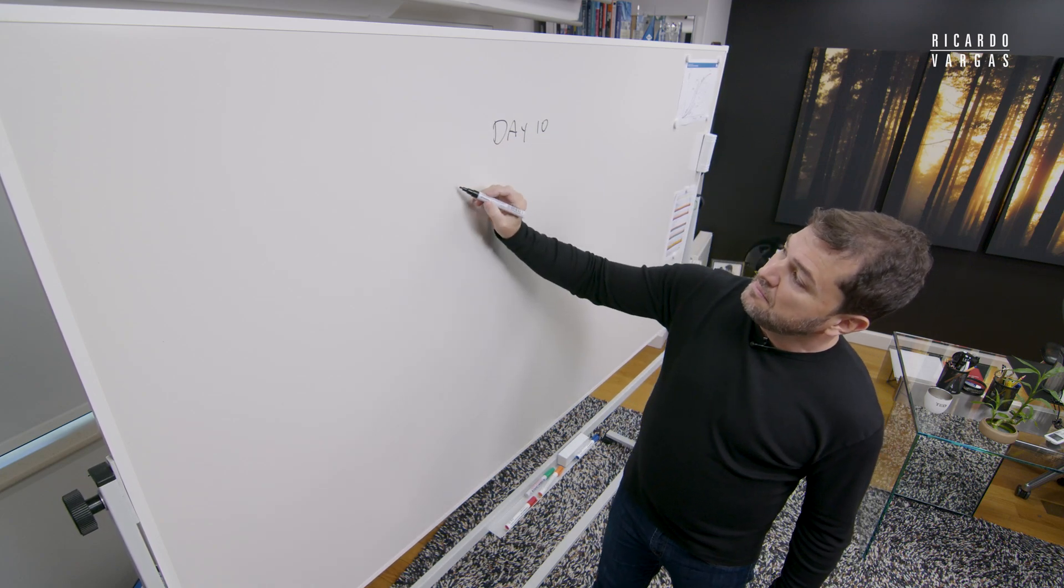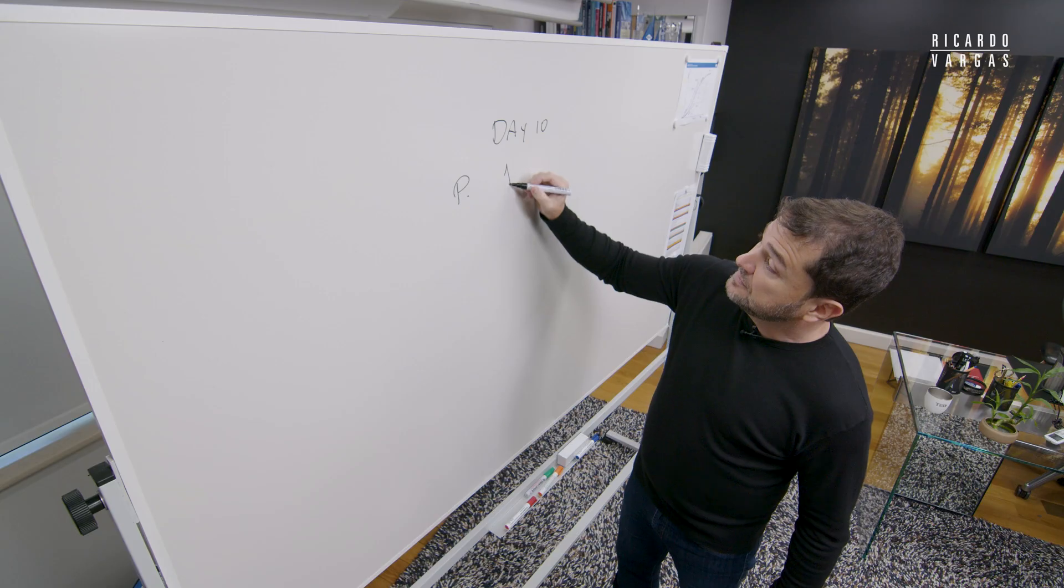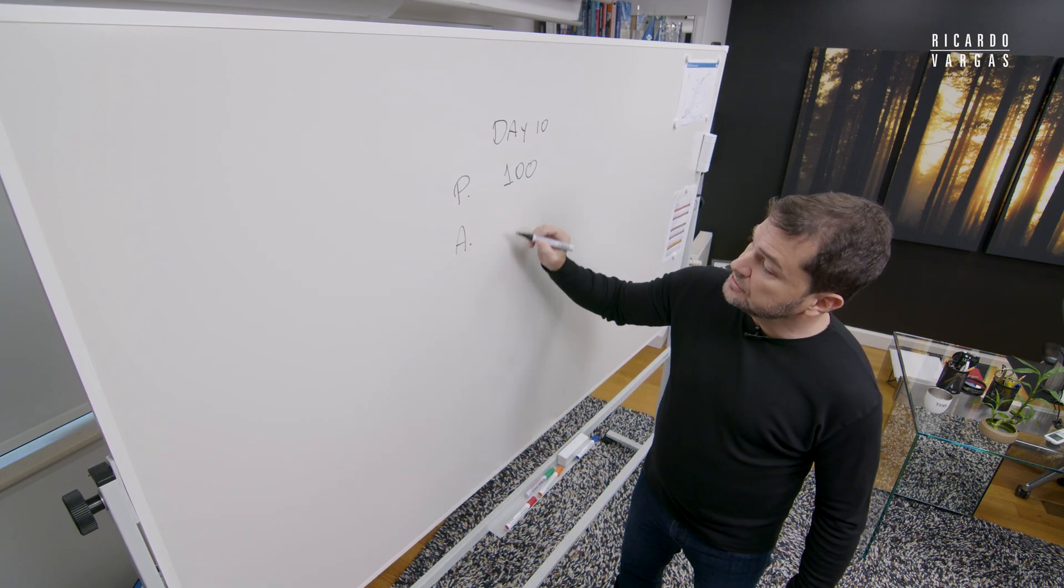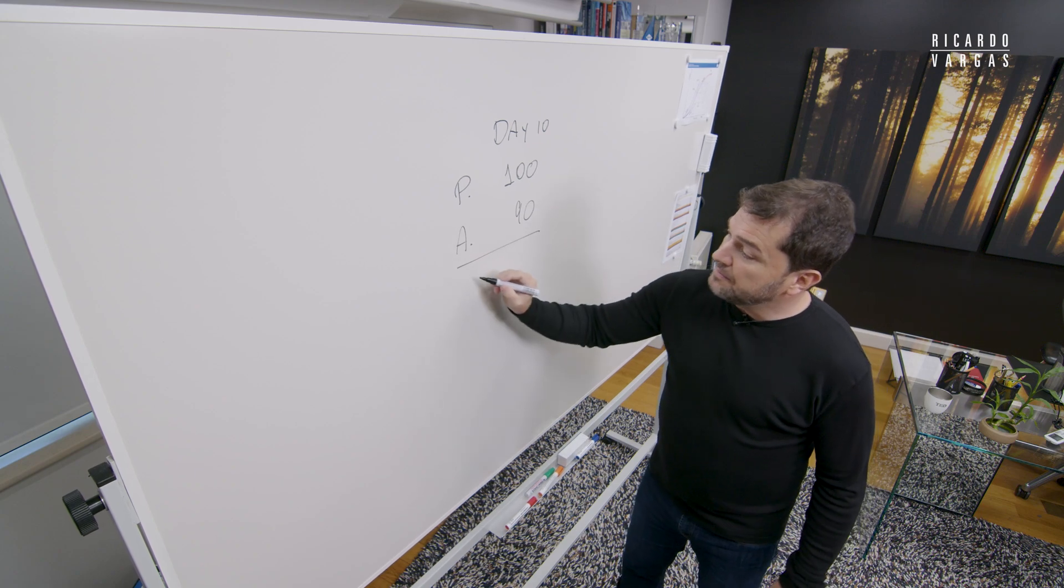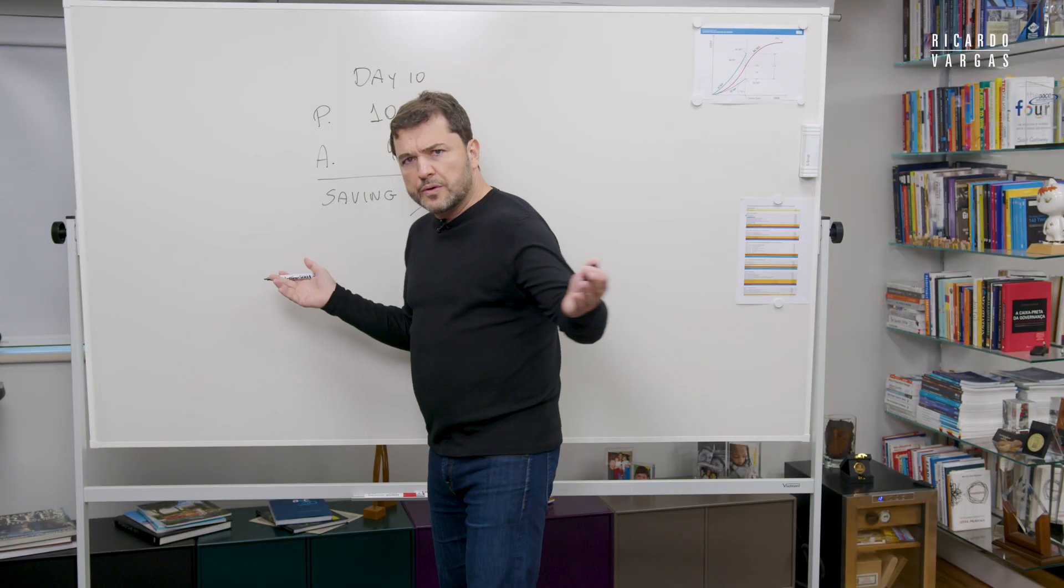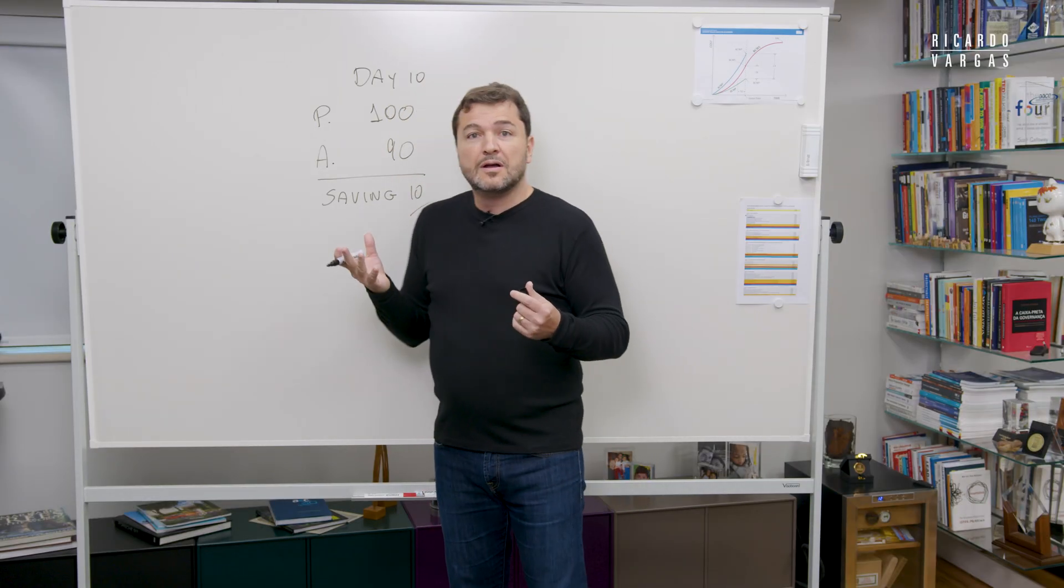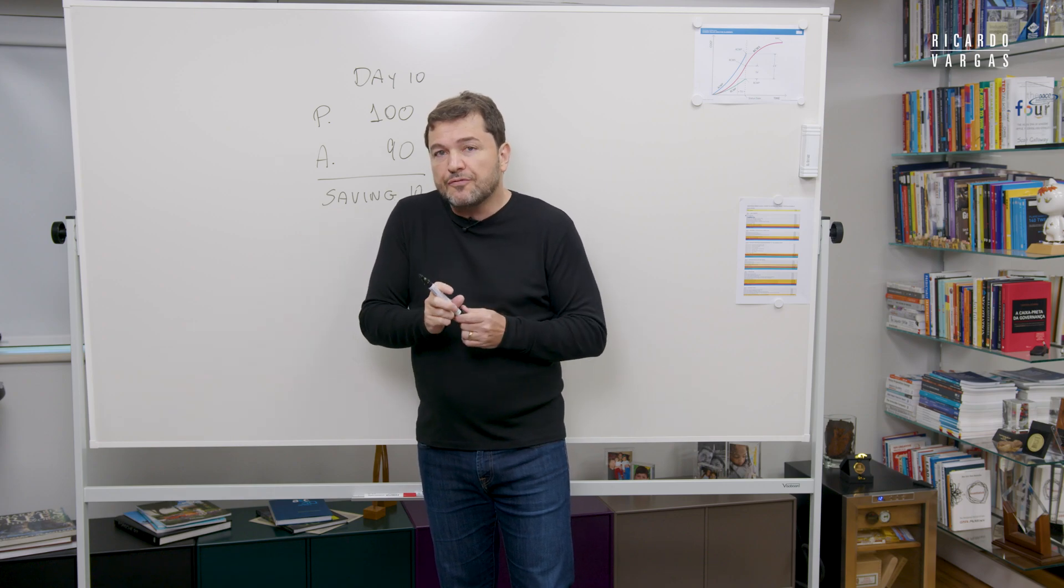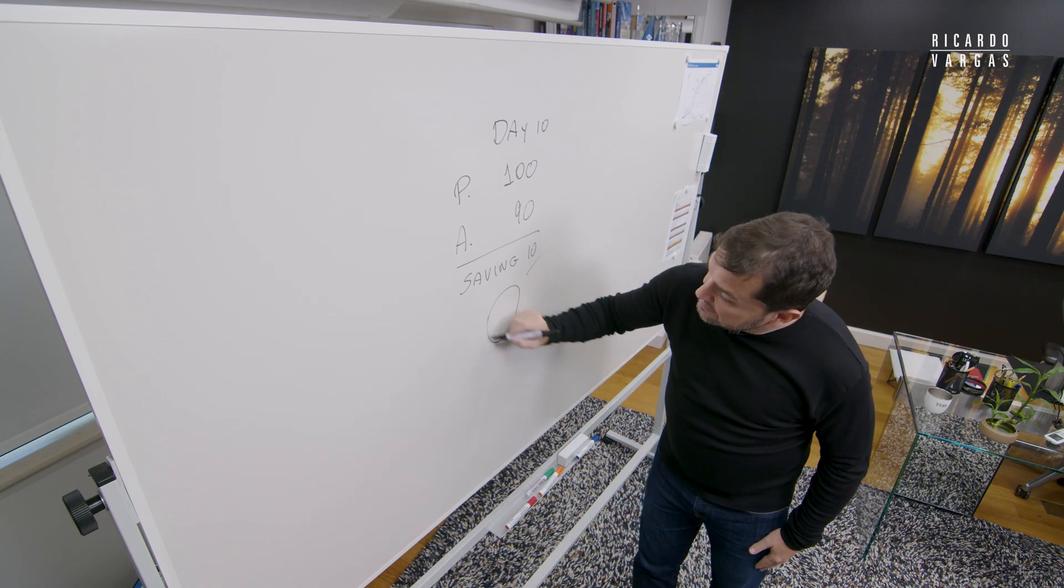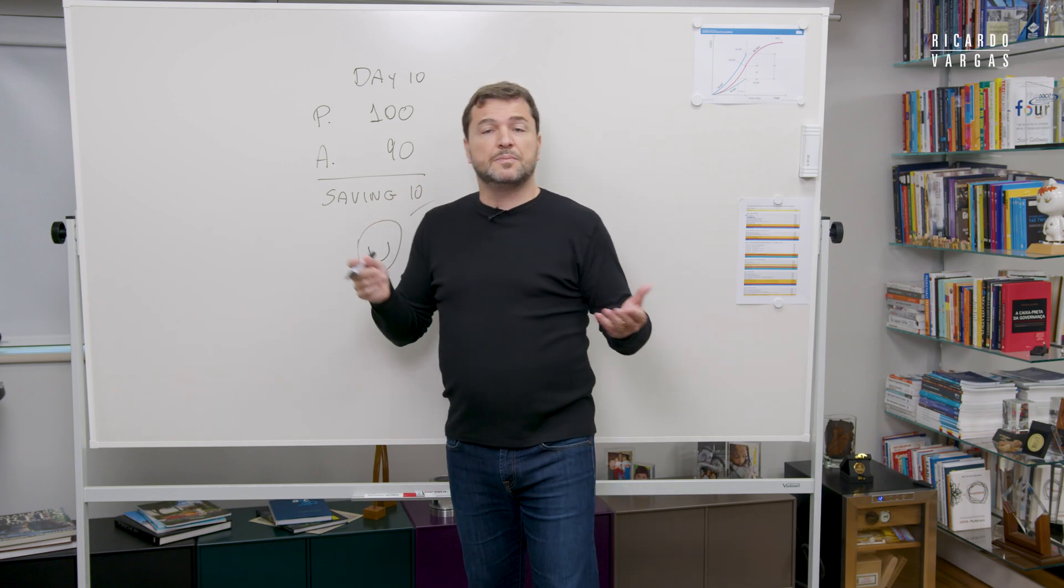I had a planned expenditure of $100 and an actual expenditure of $90. It means I'm saving $10. Do you agree with me? Simple like that. This is how traditional project management and traditional forecast is made. So I'm saying I'm in a good position here because I'm saving a little bit more.